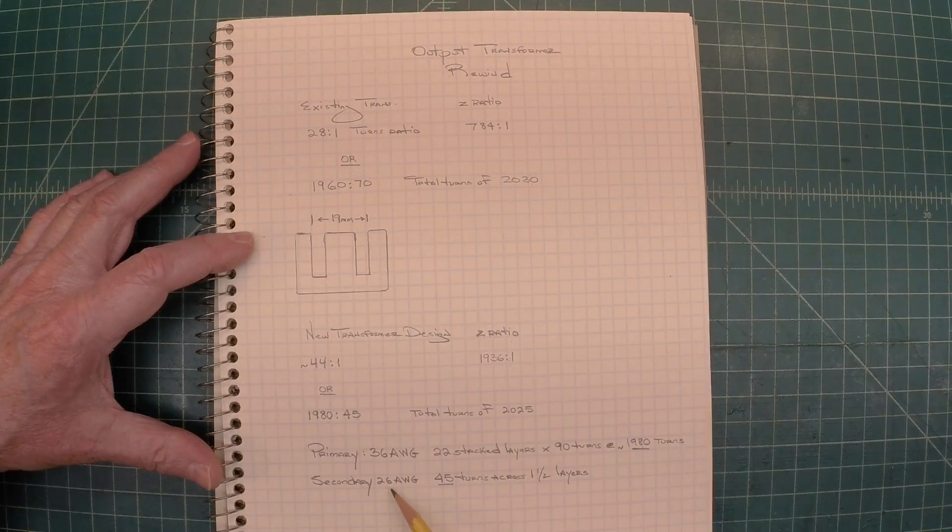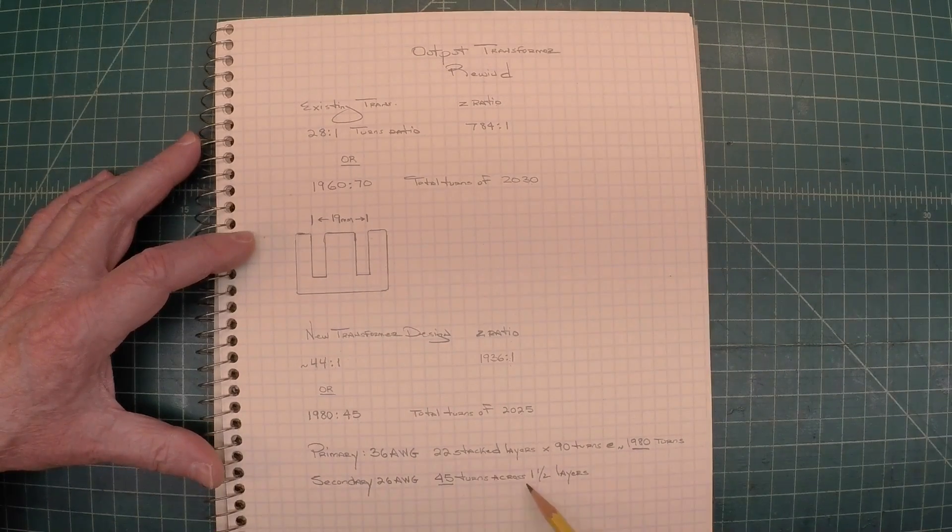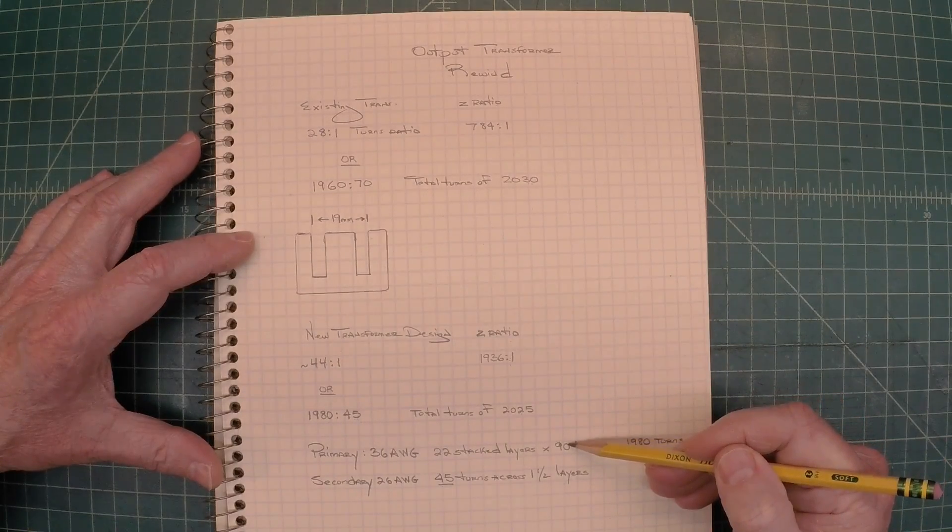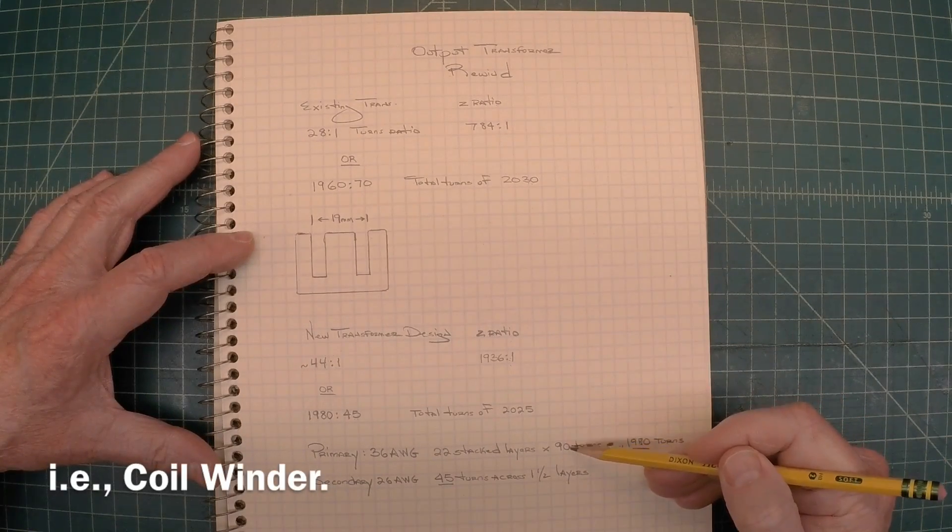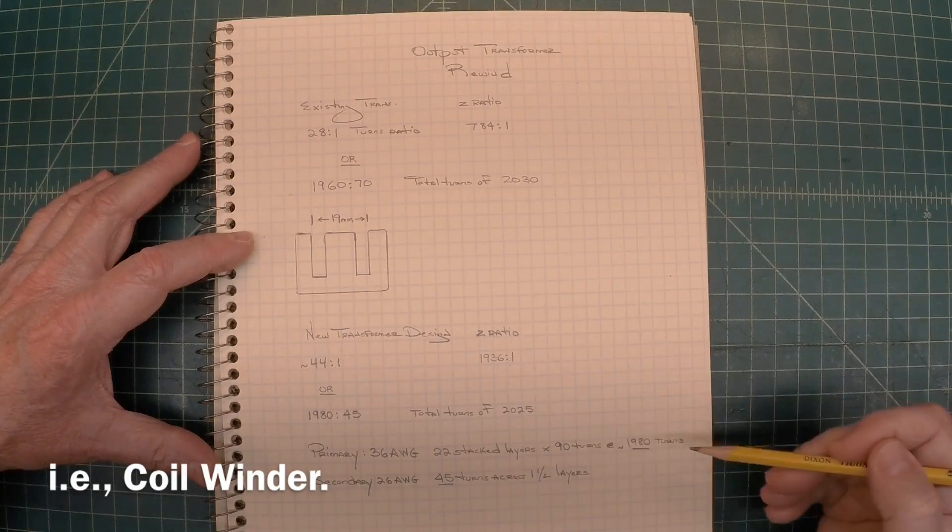The secondary side 26 AWG, 45 turns, and I've completed that by hand. We'll use my little coil jig that I built and try to do this one on camera if things work out.